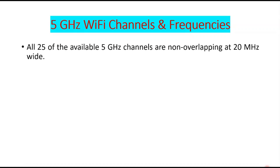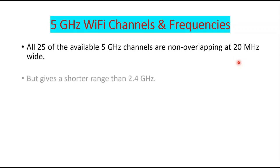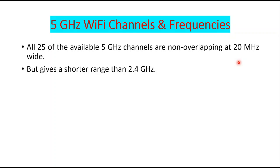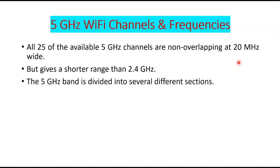Coming to 5 GHz Wi-Fi channels and their frequencies: as we saw in 2.4 GHz there are 14 channels, in 5 GHz there are 25 available channels and all of them are non-overlapping. In 5 GHz the channels are spaced 20 MHz apart, whereas in 2.4 GHz they are only 5 MHz apart. However, the range in 5 GHz is comparatively shorter than in 2.4 GHz.